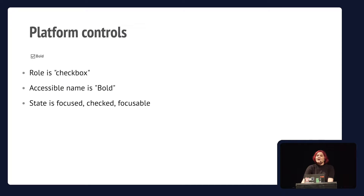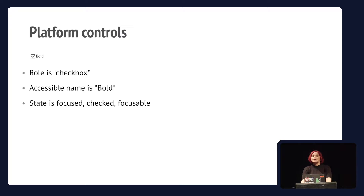When you look at different controls in an operating system like Windows, Linux, Mac OS, iOS, or Android, you'll find that there is certain accessibility information made available about different things. For example, on screen there is a checkbox from Windows 10 that lets you choose whether things are displayed in bold or not. From an accessibility point of view, this control has a role of checkbox — that's its purpose. It has a state that is focused, checked, and focusable. And lastly, it has a label or a name, which is 'bold'.